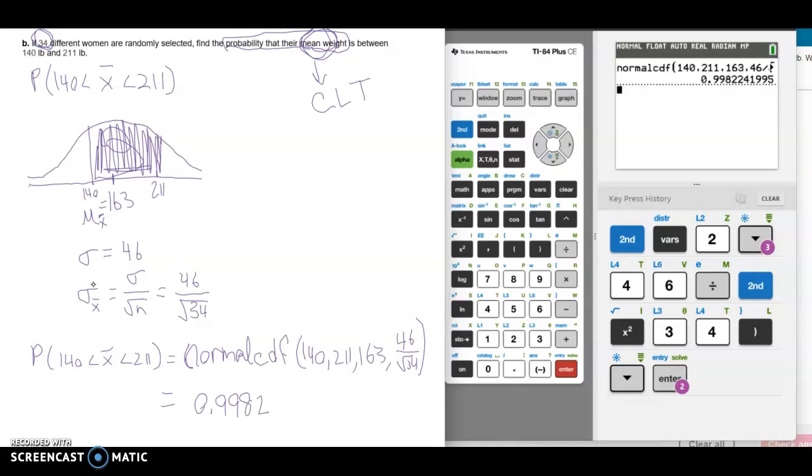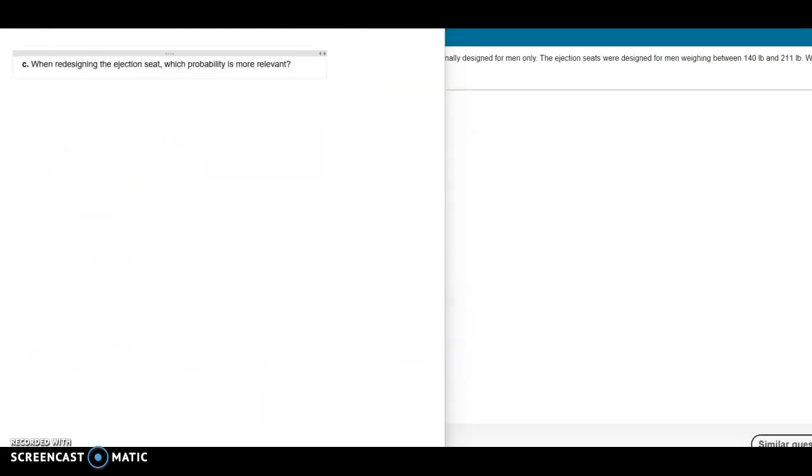So the probability that for 34 different women being randomly selected, that their mean weight is between 140 to 211 is pretty certain at 0.9982. For part C, we're asked when redesigning the ejection seat, which probability is more relevant. Well, there's only one person sitting in the ejection seat. So the probability for an individual is probably more important in that case. So use that information and choose the best choice based on that.